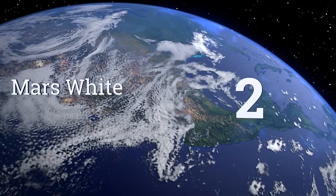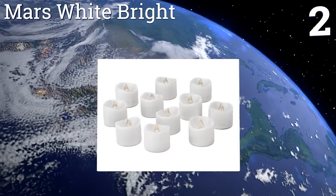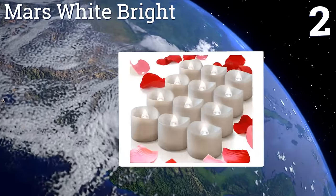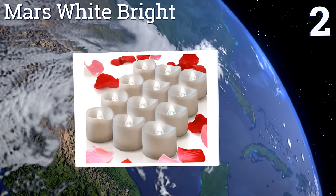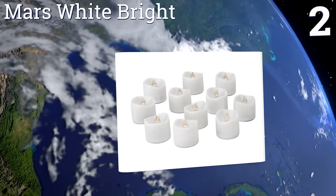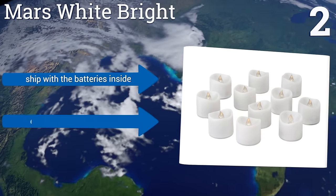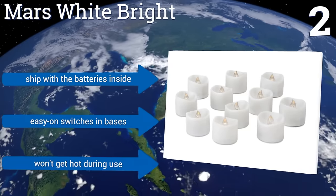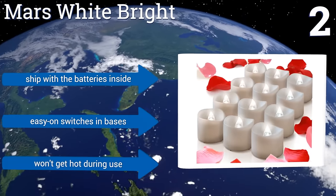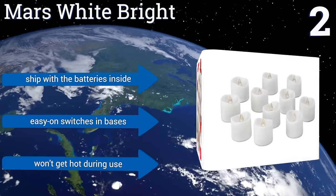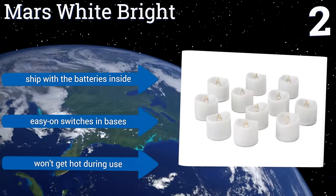At number 2, the best option if you're on a budget but still want to purchase something made of high quality materials is the Mars White Bright. This romantic set comes with 12 small tea lights and 100 faux rose petals, making it ideal for Valentine's Day and anniversaries. They ship with the batteries inside and have easy on switches in the bases. They won't get hot during use.